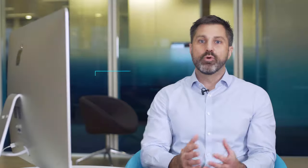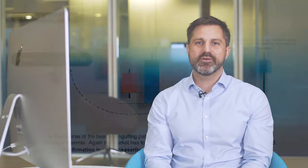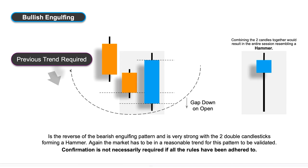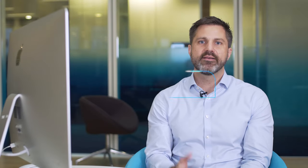The next pattern is the bullish engulfing pattern — the opposite of the bearish one. Here we see the market gap lower the next day, so we think the trend is down. Initially we think there's momentum on the downward side and that could be a sell trade. But by the end of the day the buyers have come back into the market and the actual price finishes above the previous close. So there's a potential opportunity there to place a buy trade.